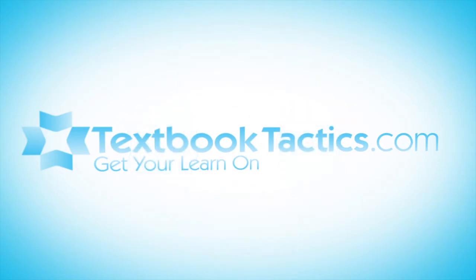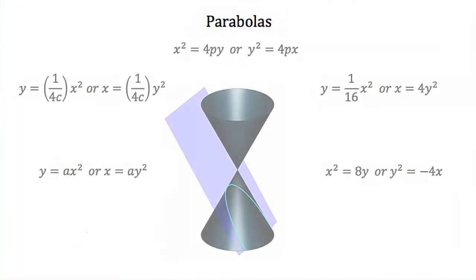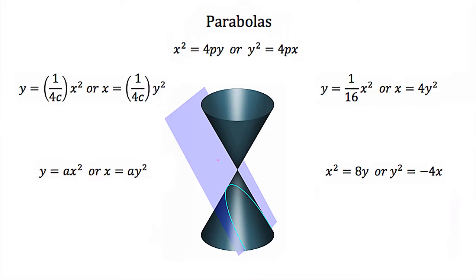This is the tutorial on parabolas as conic sections. When we create a parabola as a conic section, it comes from when we take our plane and intersect the double cone where the plane is parallel to one of the edges of the cone. When that happens, the conic section that we get is that of a parabola.